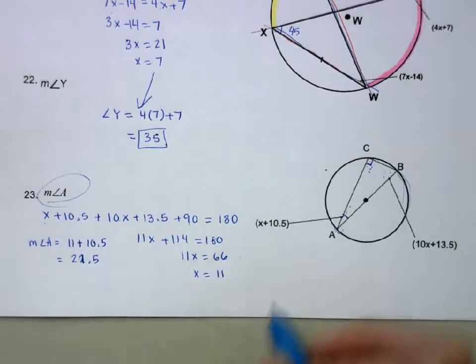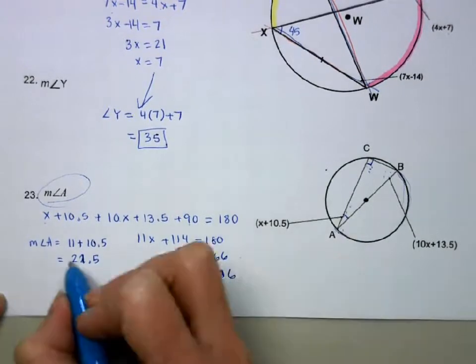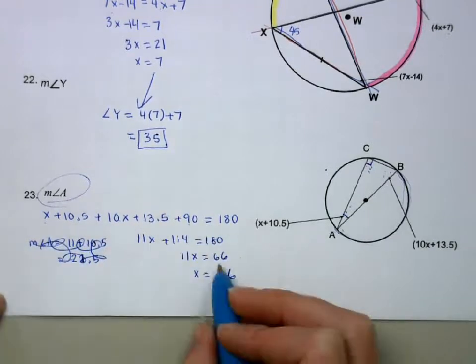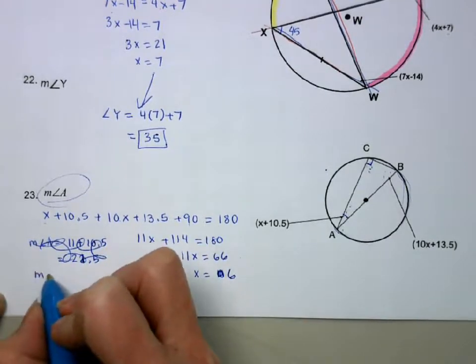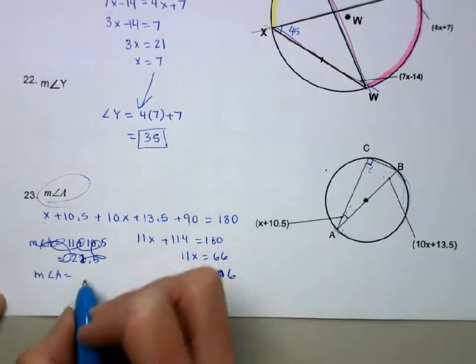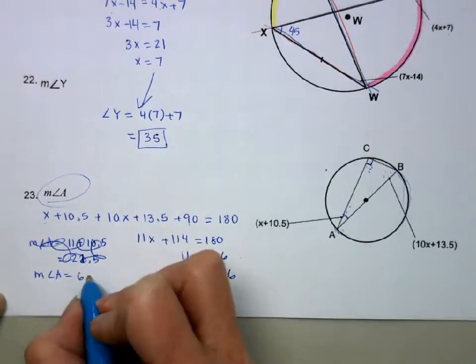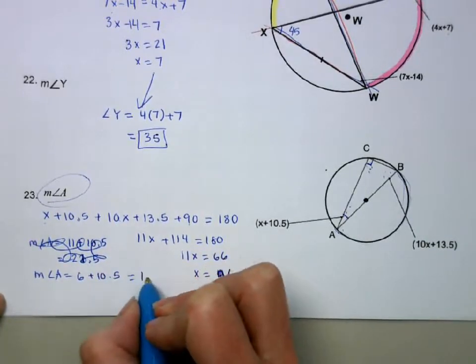This over here is 6. Bad math. So the measure of angle A is 6 plus 10.5, which is 16.5. Sorry for any confusion on that.